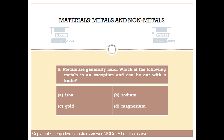Question number five. Metals are generally hard. Which of the following metals is an exception and can be cut with a knife? Option A: Iron. Option B: Sodium. Option C: Gold. Option D: Magnesium.